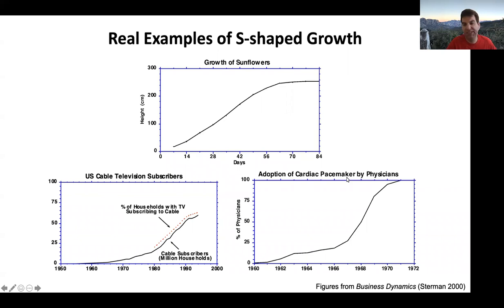You can also see S-shaped growth in adoption of other technologies like pacemakers — this shows how many physicians are prescribing pacemakers: slow adoption, then it picks up quickly, then it rounds out. Both of the bottom curves have to saturate because they stop at 100% — you can't go more than 100%, so that growth has to stop. S-shaped growth will happen in many examples where people adopt things but there's a fixed number of people to adopt.